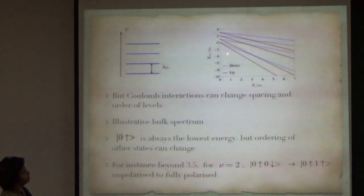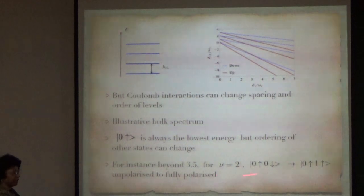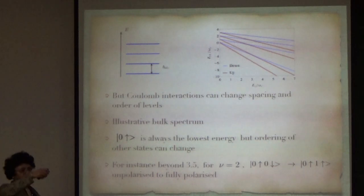The spin up and the spin down no longer have the same energy levels. If you go sufficiently far, what you will find is that the spin up of the lowest Landau level and the spin up of the next Landau level are filled before the spin down of the lowest Landau level comes lower in energy. Although 0 up is always the lowest energy, the ordering of the other states can change. For instance, beyond E_C/ωc = 3.5, instead of 0 up 0 down, it goes to 0 up 1 up. It goes from an unpolarized state to a fully polarized state.